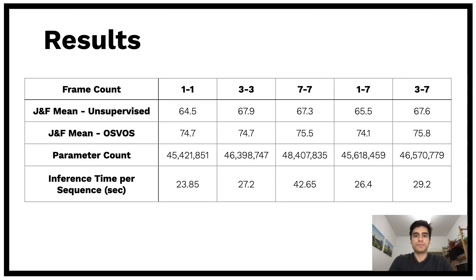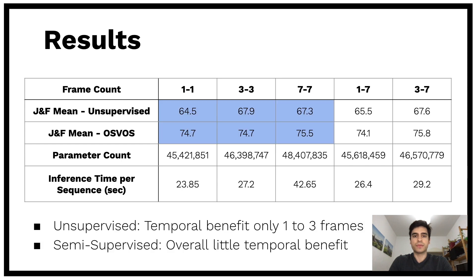Now we come to the comparison between our different configurations. First we want to talk about temporal context. In the unsupervised setting we see a good improvement from one to three frames, but no further improvement from three to seven frames. So seeing a lot of context doesn't seem to be beneficial.